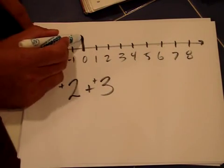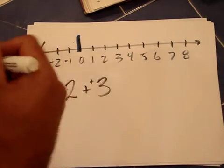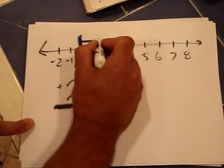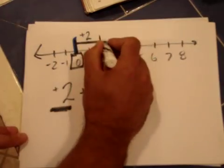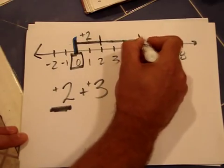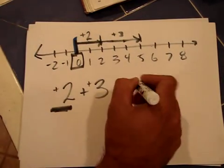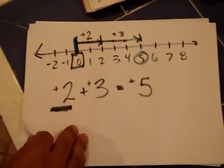Let's look at the number line. Adding positive integers means moves to the right. Starting at 0, adding 2 means 2 moves to the right, and then 3 more moves to the right. Altogether I moved positive 5, which is where I ended up. 2 plus 3 is 5.